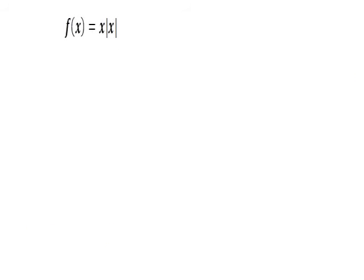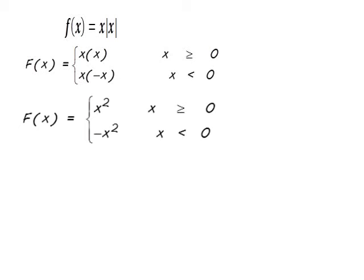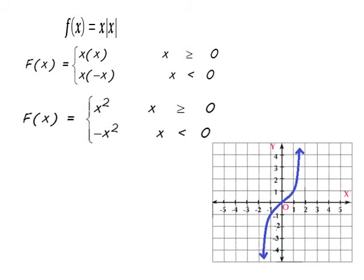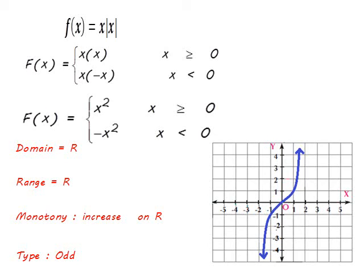For f(x) = x · |x|, expanding gives x · x = x² when x ≥ 0, and x · (−x) = −x² when x < 0. The x² part graphs part of the parabola, and −x² is the parabola reflected on the x-axis. The domain is ℝ and the range is ℝ. The function increases on ℝ and is an odd function.